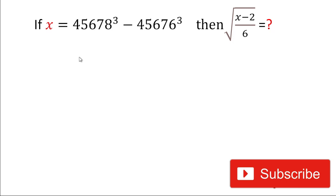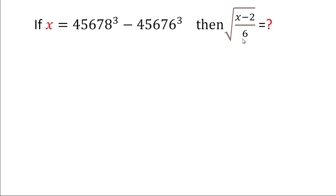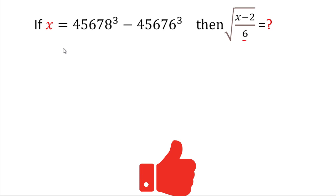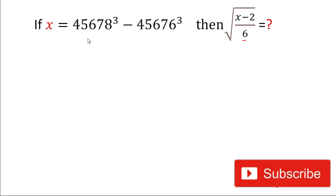Hey friends, welcome back! Today in this video we'll solve this interesting mathematical problem. The given problem is: if x is equal to 45678 cubed minus 45676 cubed, then we'll have to find the value of the square root of (x minus 2) divided by 6. Don't forget to give a thumbs up and subscribe to my channel. Let's start the video.